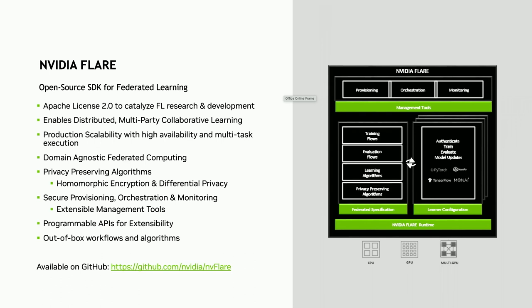NVFlare has built-in privacy-preserving algorithms: HE (homomorphic encryption) and DP (differential privacy). HE is out of the box — we handle almost every context generation for HE. During training, we make sure your model, when sent from the client to the server, is protected through HE. The server can receive the model but cannot fully decrypt it, yet it can still perform arithmetic addition and multiplication on all collected models to generate a new HE-protected aggregated model to send back.